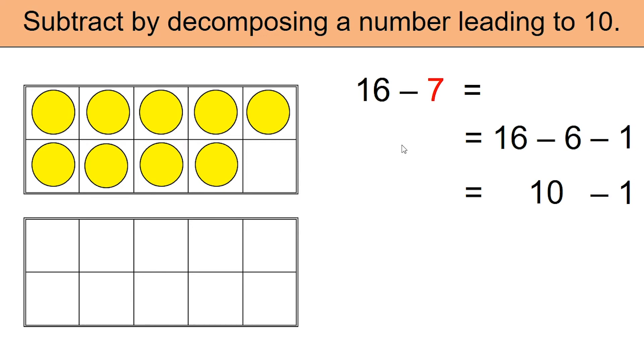Now we are left with 9. So 16 minus 7 is equal to 9.